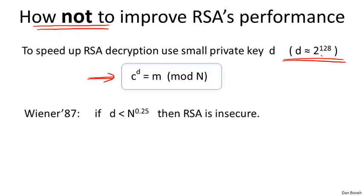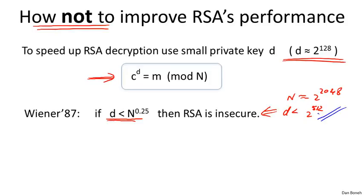There's an attack by Michael Wiener that shows that as soon as the private exponent d is less than the fourth root of the modulus — if the modulus is around 2,048 bits, that means if d is less than 2 to the 512 — then RSA is completely, completely insecure. It's insecure in the worst possible way: just given the public key N and E, you can very quickly recover the private key d. Some folks said this attack works up to 512 bits, so why not make the modulus 530 bits? Then this attack wouldn't apply but you'd still speed up RSA decryption by a factor of four.